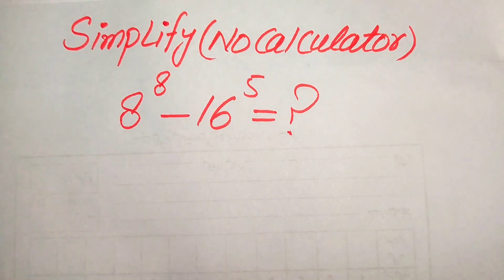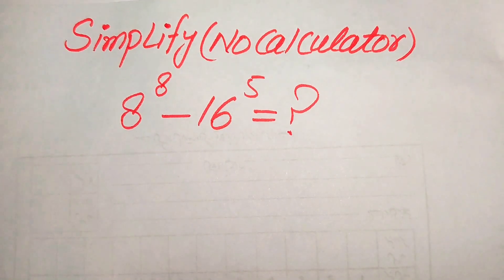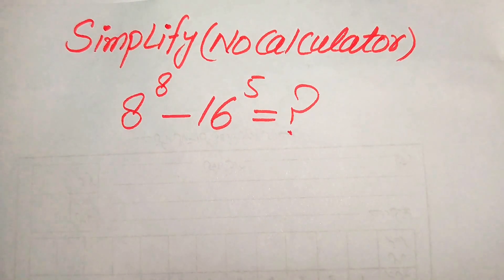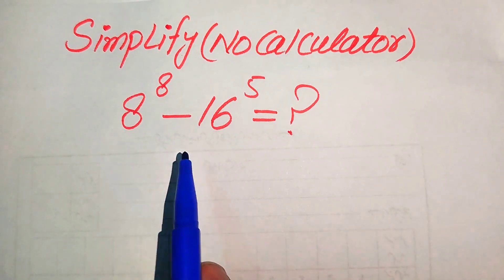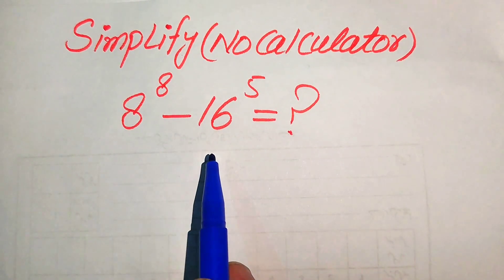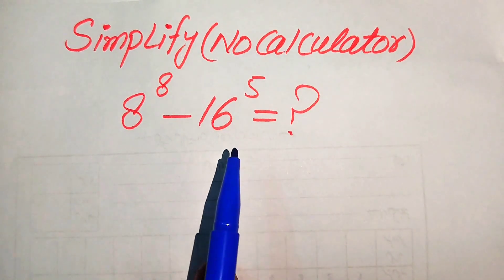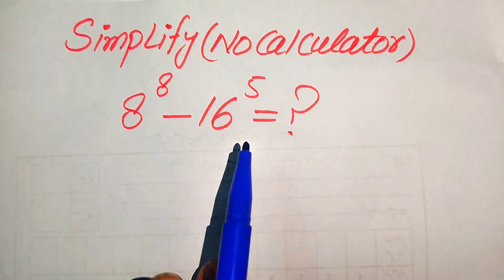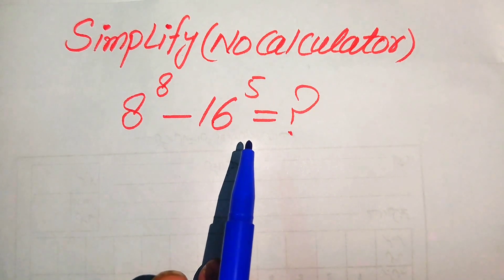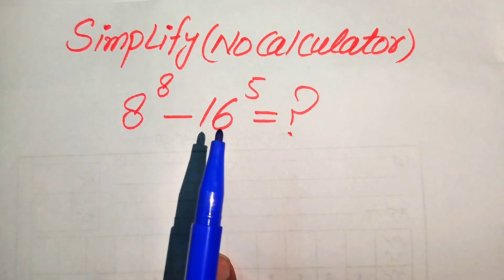Hello everyone. How to simplify this nice algebraic expression: we have 8 to the power of 8 minus 16 to the power of 5, and we need to simplify this term into the lowest form.